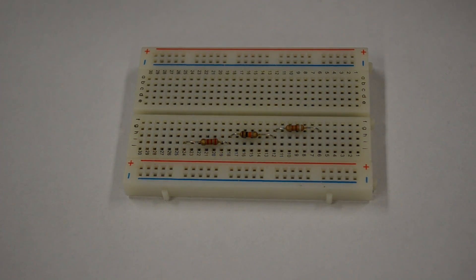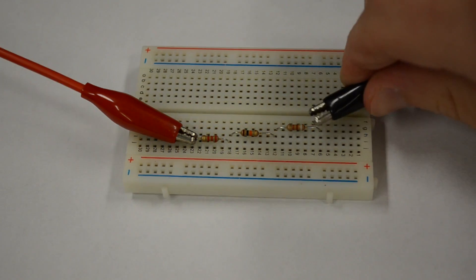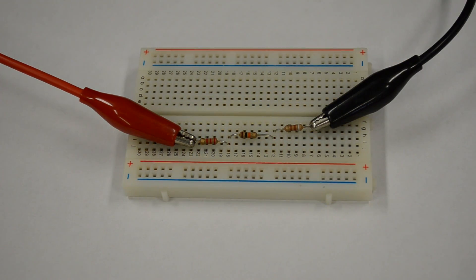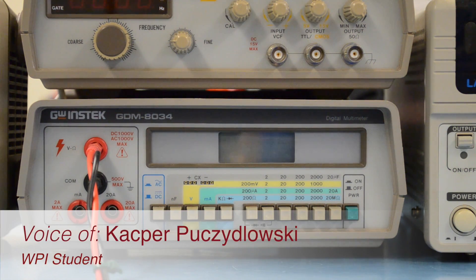So first we have to attach the positive and negative leads of the multimeter. Now that we've set up our circuit, let's turn on the multimeter and measure the resistance across the three resistors.